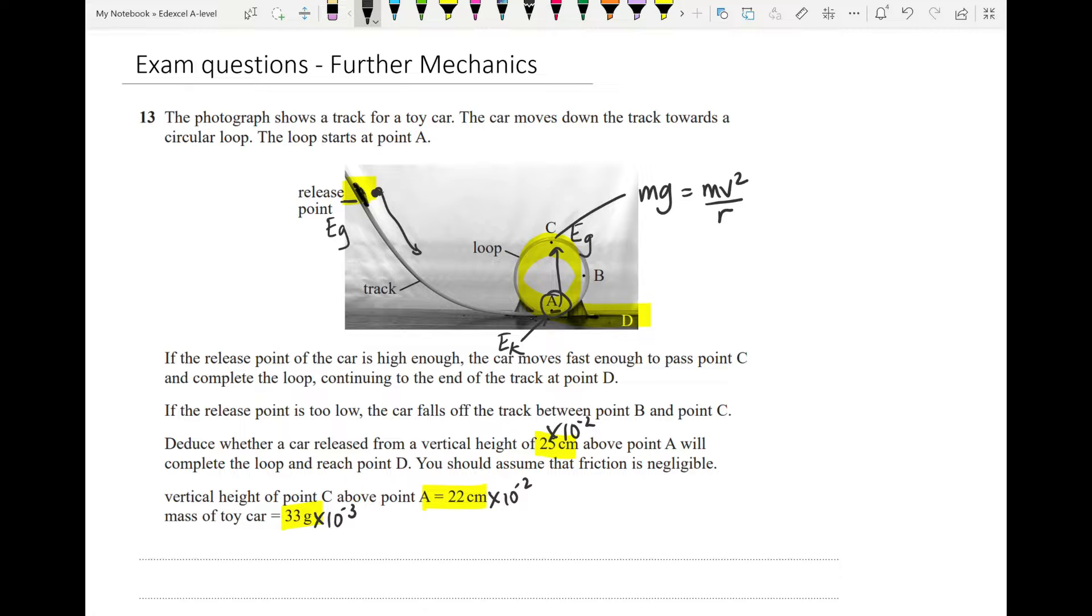We're going to establish how much kinetic energy it has at A. To do that, we first need its speed at C. We're going to use this equation that I've put up here and find out what its speed at C is. If we do a little rearranging, we'll see that the speed is going to be the square root of G times R, and that's going to give you 1.04 meters per second.